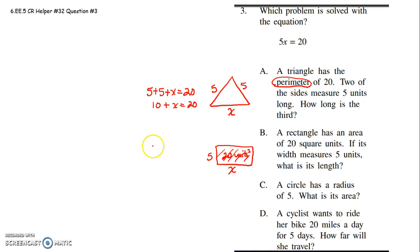You have to know the formula for the area of a rectangle is length times width. So your area is 20 square units equals your length is x times they give you your width of 5. So you start saying, is that the same equation?